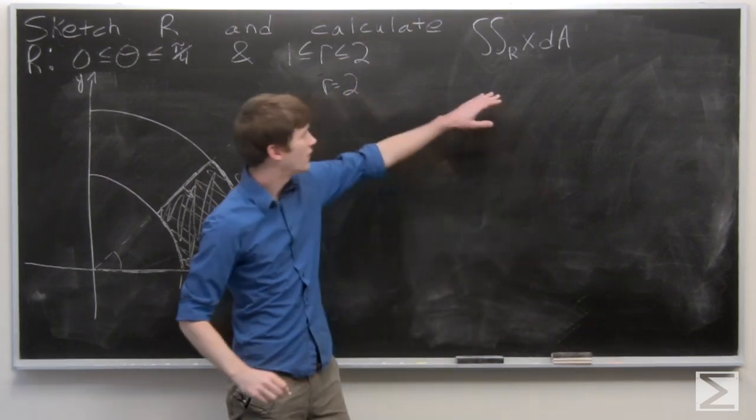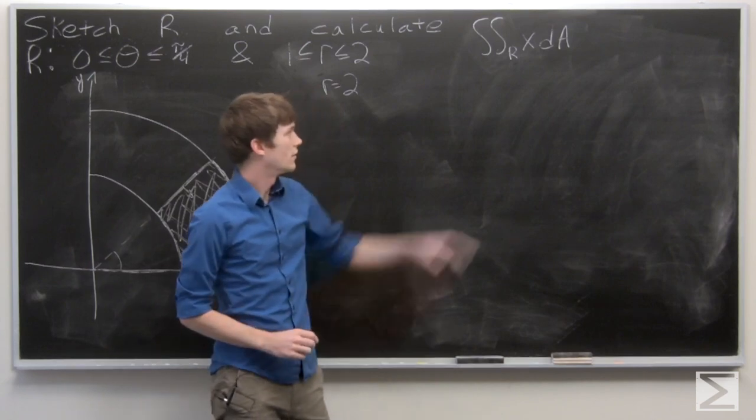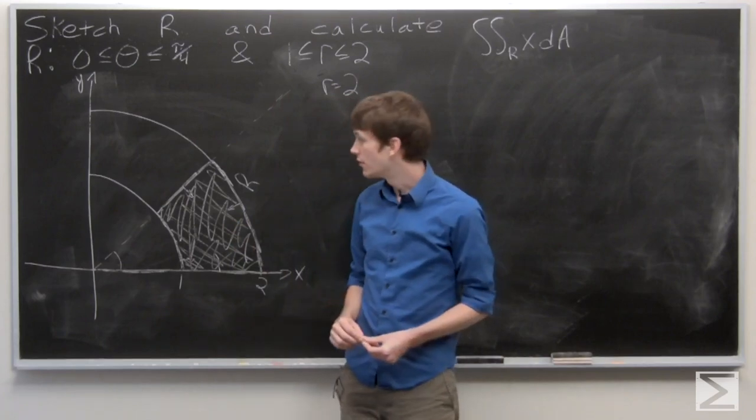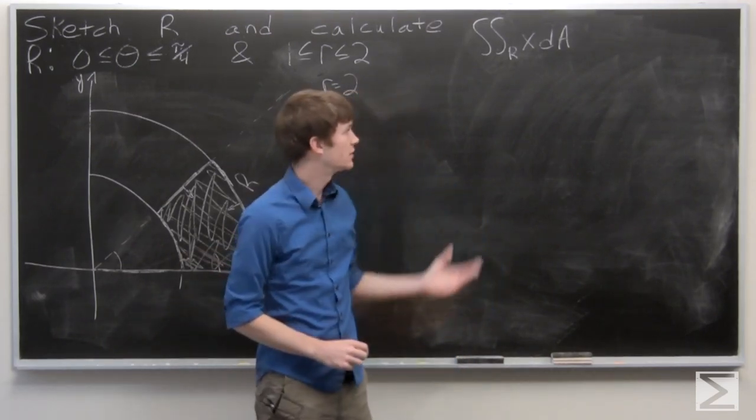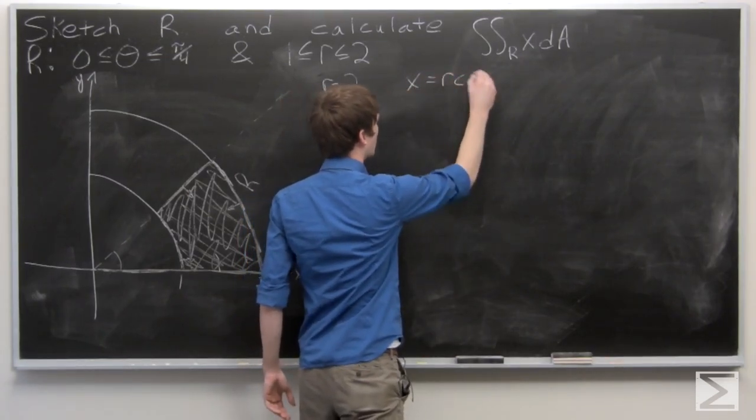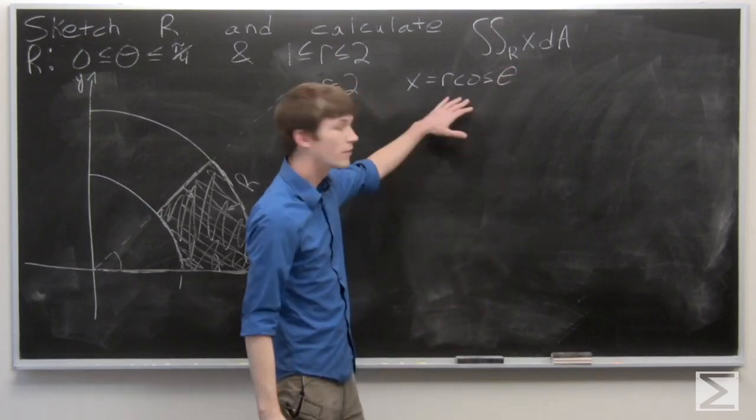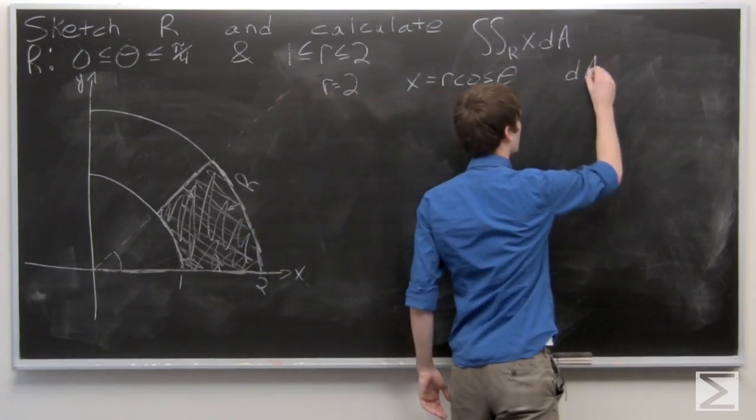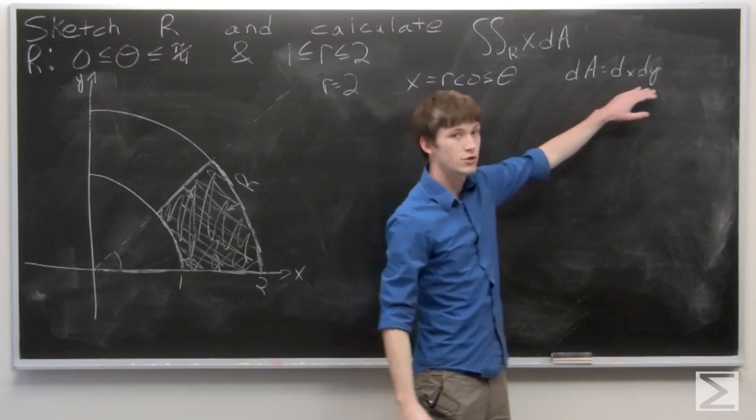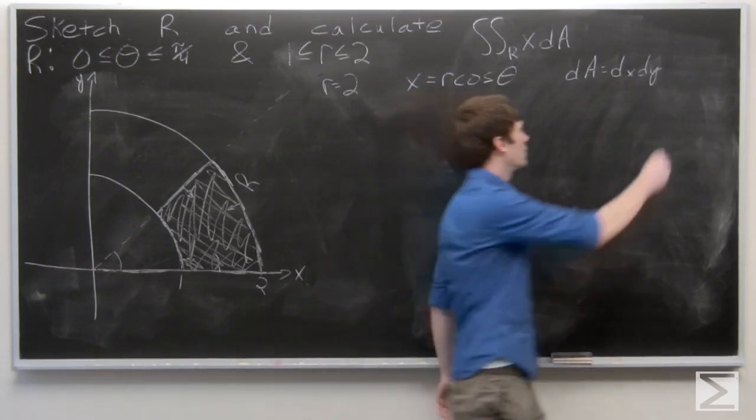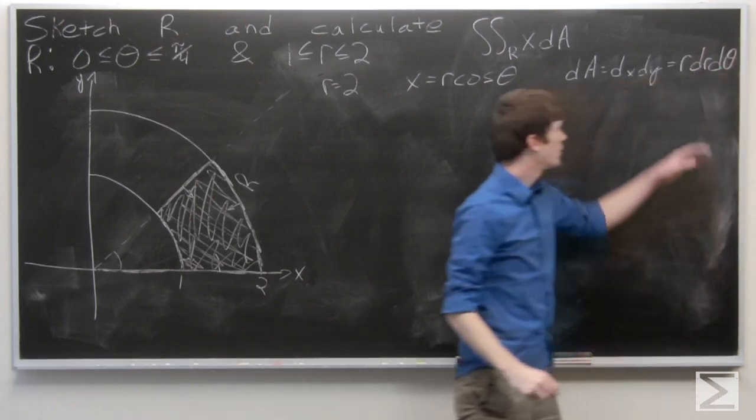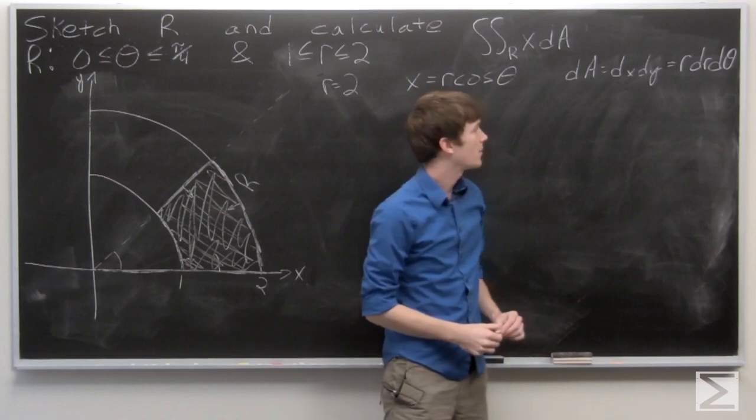So now we want to evaluate our integral, our double integral of x over our region R. First we'll use polar coordinates. We know that x is equal to R cosine theta and dA in Cartesian coordinates is dx dy. But in polar coordinates it's R dr dθ.